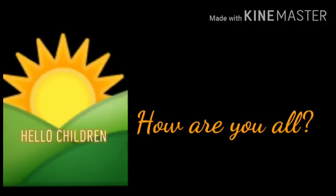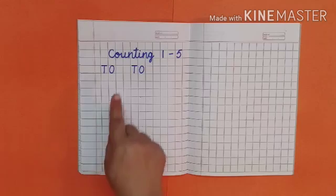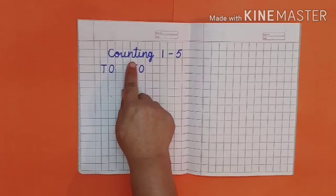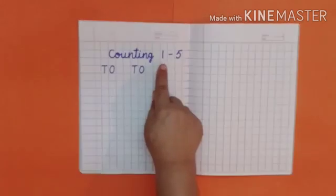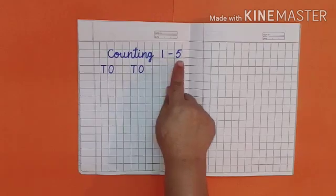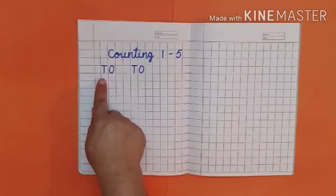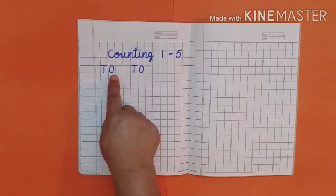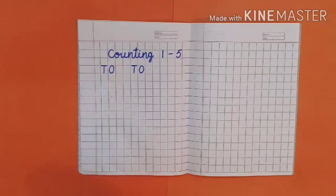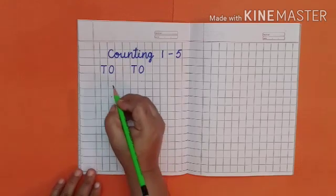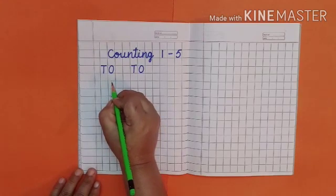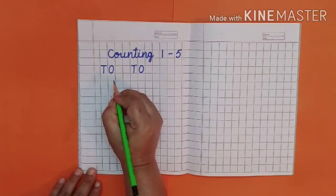Hello children. Hope you all are fine and fit. Today we will write counting from one to five under tens and ones. T for tens, O for ones. We will write one to five under ones. Let us begin.